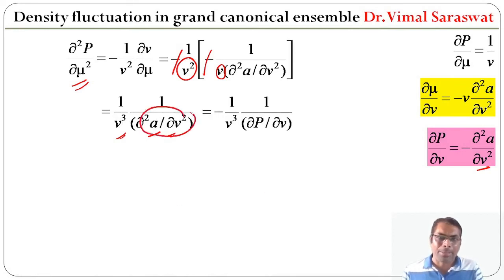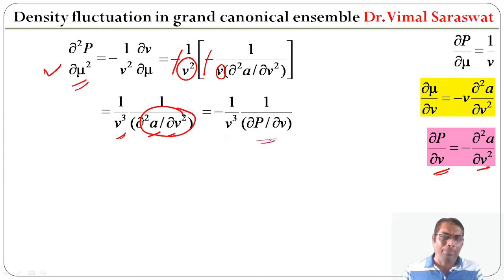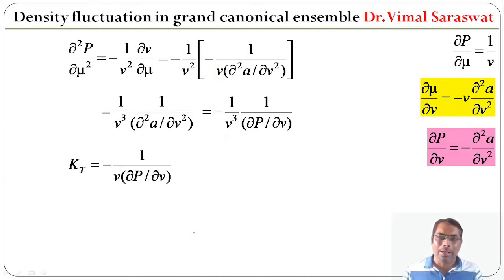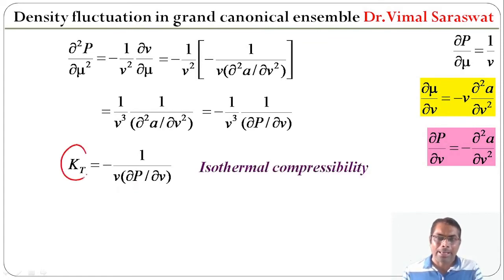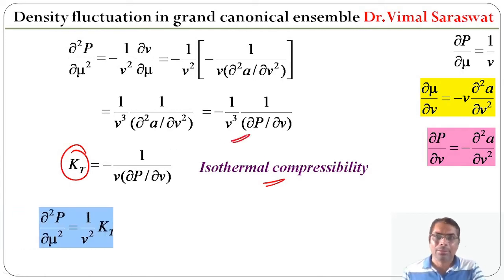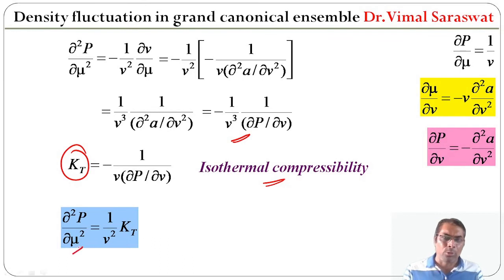Replacing ∂²a/∂v² using ∂p/∂v = −∂²a/∂v², we get ∂²p/∂μ² = −1/(v³·(∂p/∂v)). Since κT is the isothermal compressibility, substituting gives ∂²p/∂μ² = κT/v².